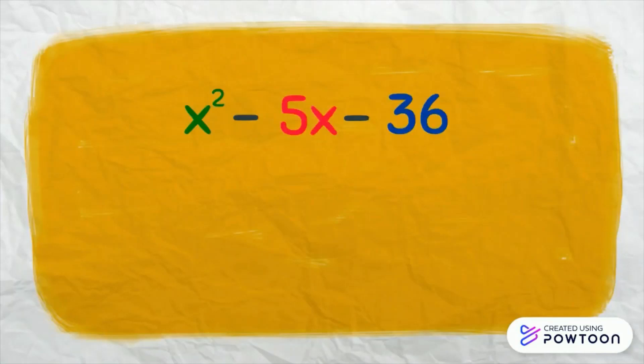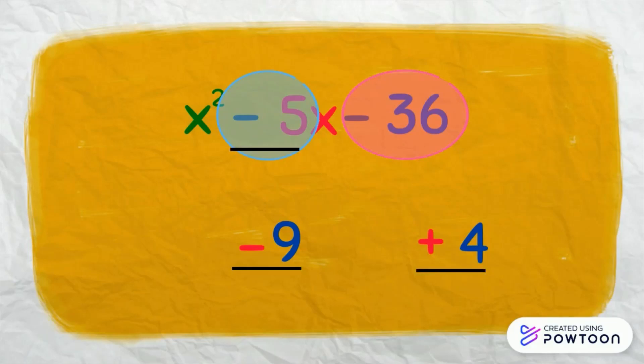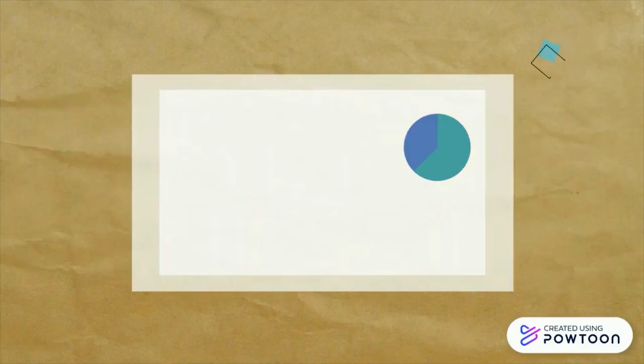How about this? What are the factors of negative 36 that when added equals negative 5? Negative 9 and 4 is negative 36. And when added, negative 9 and positive 4 is negative 5. The factors are x minus 9, x plus 4. I hope you learned something.